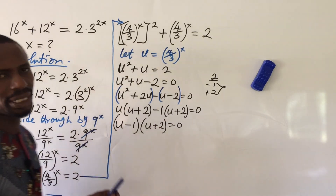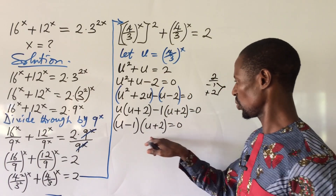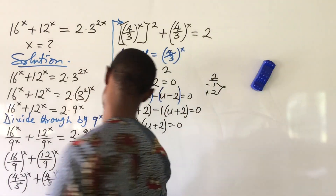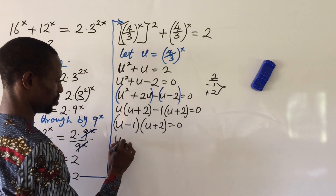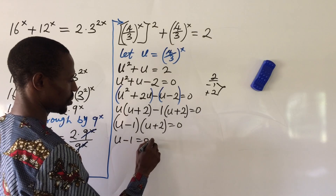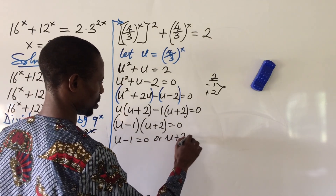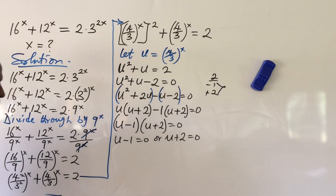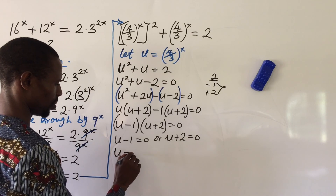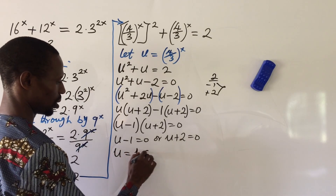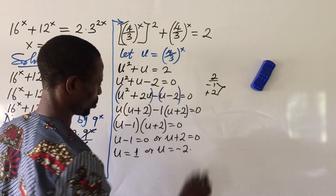Applying the zero product rule, we equate each factor to zero: u − 1 = 0 or u + 2 = 0. So we get u = 1 or u = −2. Recall we don't have u in the original equation — we only have x — so we substitute back using u = (4/3)^x.